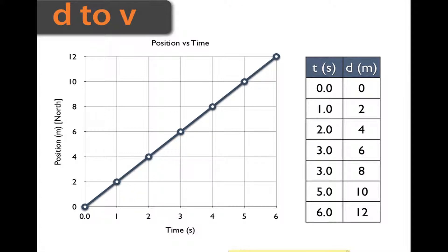Let's take a look at this graph. Notice on the right that we have a table with position points and time points. This table was used to create this graph. What we're going to do is take the data from the table on the right and convert it into a velocity versus time graph.